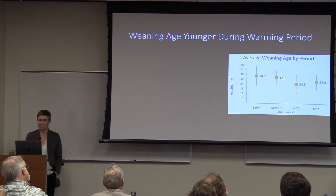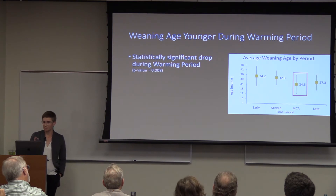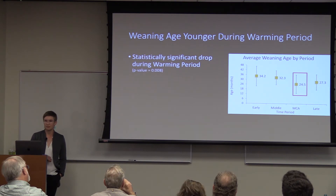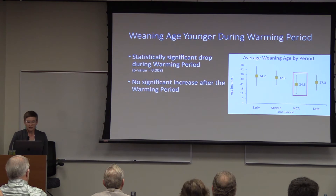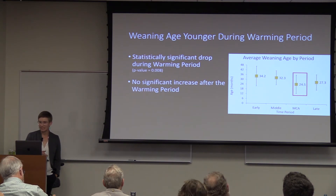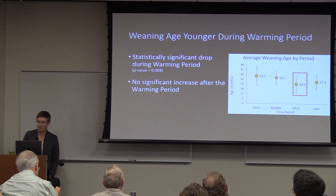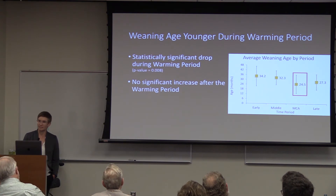Weaning age does drop during the warming period. There's a statistically significant shift from around 34 to 32 months of age before the warming period to around 24 months during the warming period — nearly a year's difference. There's no significant increase after the warming period. Despite this dramatic drop, in all time periods parents on average are meeting or exceeding the World Health Organization recommendation of breastfeeding until 24 months of age.